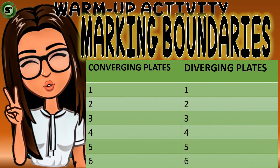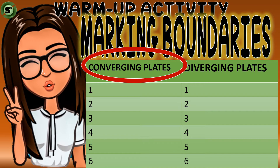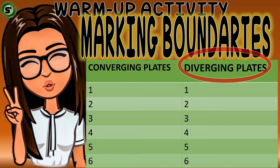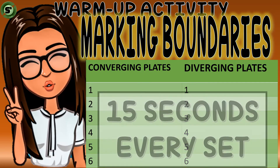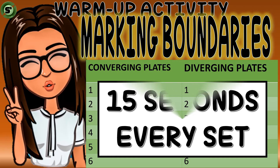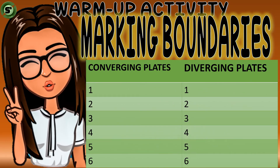In the first row, under the first column write converging plates, and for the second column, write diverging plates. The 12 words are divided into three sets. For every set, you have 15 seconds to write your answer accordingly. After the third set, the correct answers will be shown. I hope you answer this activity with flying colors.